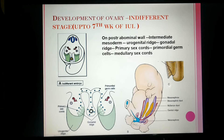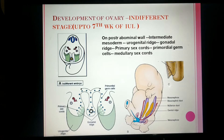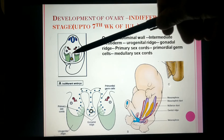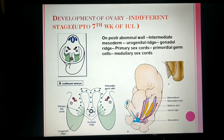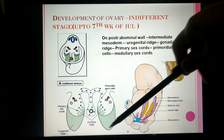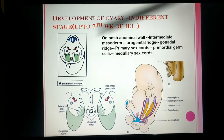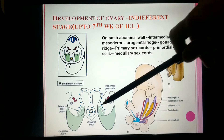In the indifferent stage of gonad development, first there is formation of the urogenital ridge by the intermediate mesoderm. On the posterior abdominal wall, the intermediate mesoderm forms a longitudinal elevation called the urogenital ridge. On the medial side of the urogenital ridge, the gonadal ridge is formed. Here you can see the mesonephric region, and on its medial side there is the genital ridge. In this diagram, the green highlighted part is the urogenital region, and on the medial side is the gonadal ridge.